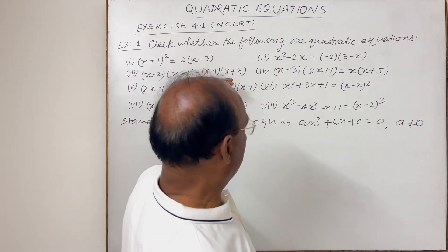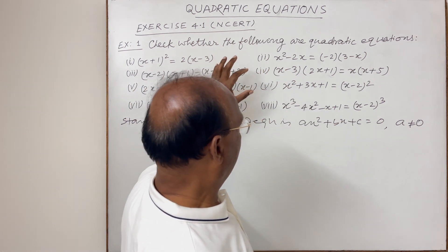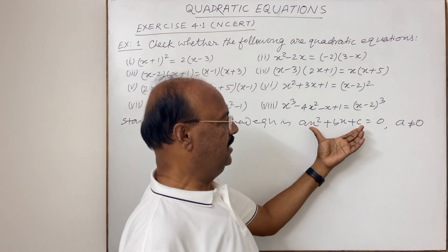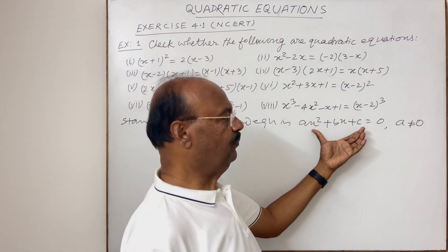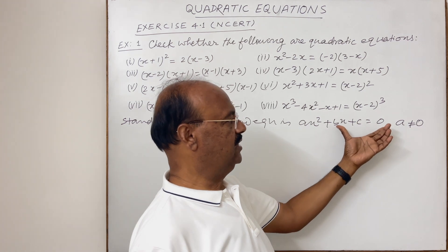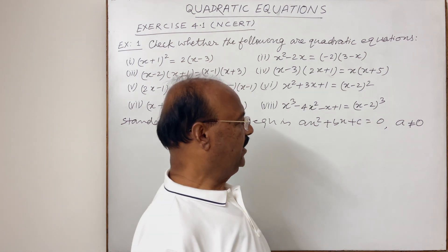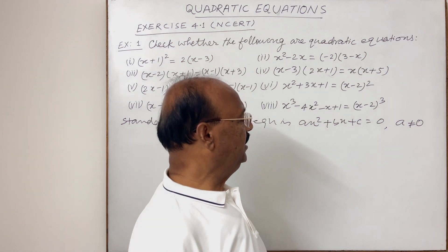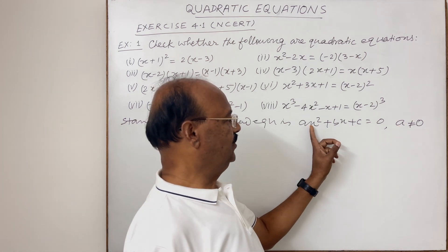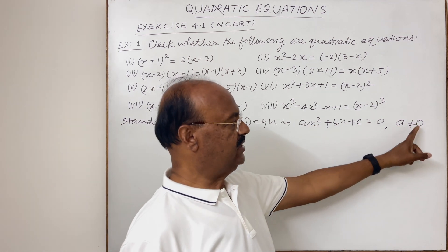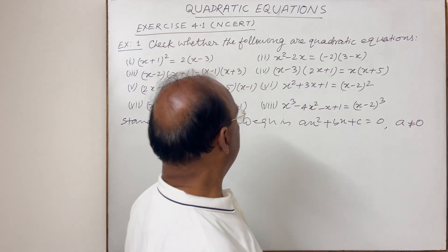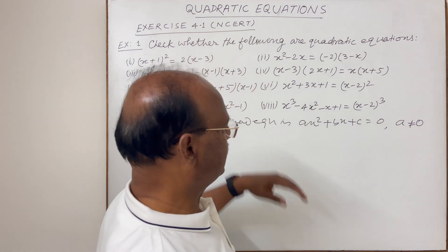We need to check whether the given equations can be expressed in the form ax² + bx + c = 0, and particularly that the coefficient of x², which is a, is not equal to 0. Let us now discuss these equations one by one.